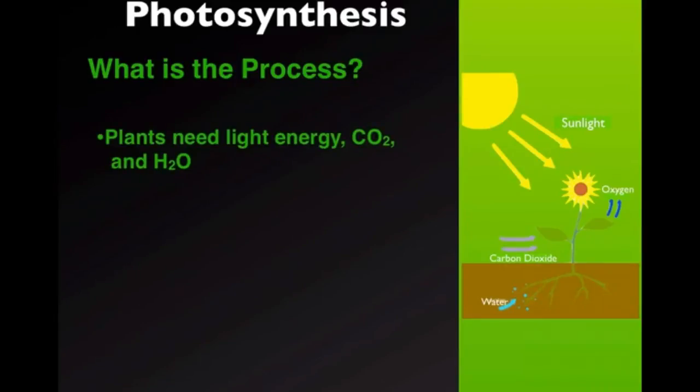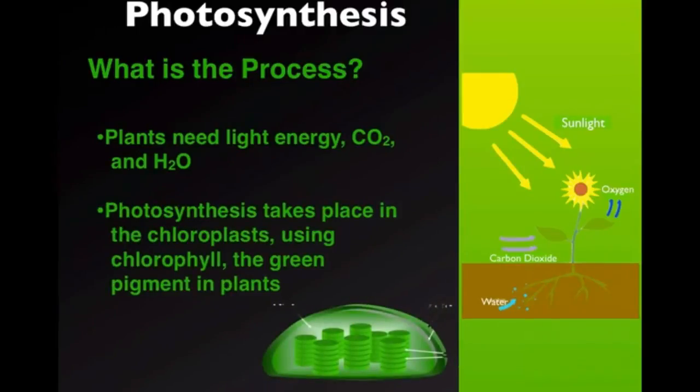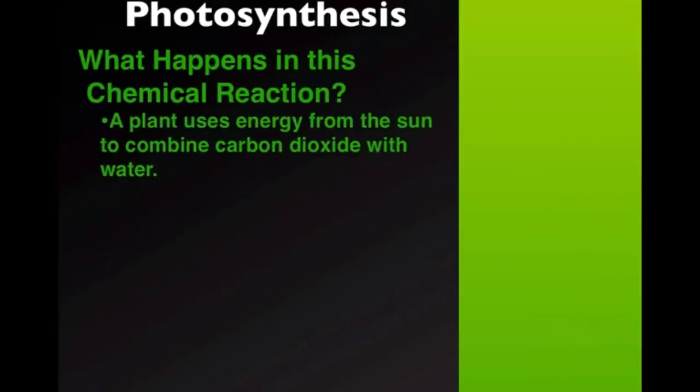So light energy is changed to another type of energy and stored. And we'll talk about that in the third quarter when we talk about energy. We'll talk about conversion of energy. But for now, we need to think about it in this particular instance. So that energy, again, is stored as sugar, as a carbohydrate. And this occurs in plants and also in some algaes. Now the plant needs light energy, carbon dioxide, and water in order to have this chemical reaction take place.